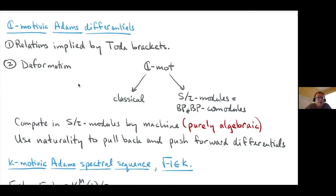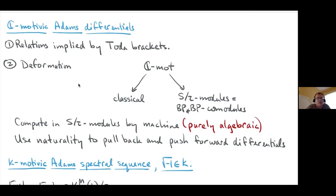We've talked a lot about computing Ext groups — that's step one of our three-step program. Step one: compute Ext. Step two: compute differentials. Step three: compute hidden extensions. Let's move to step two. One approach is to find relations implied by Toda brackets — involving the kinds of shuffling and manipulation using Massey products and various formulas to deduce relations that then imply differentials.